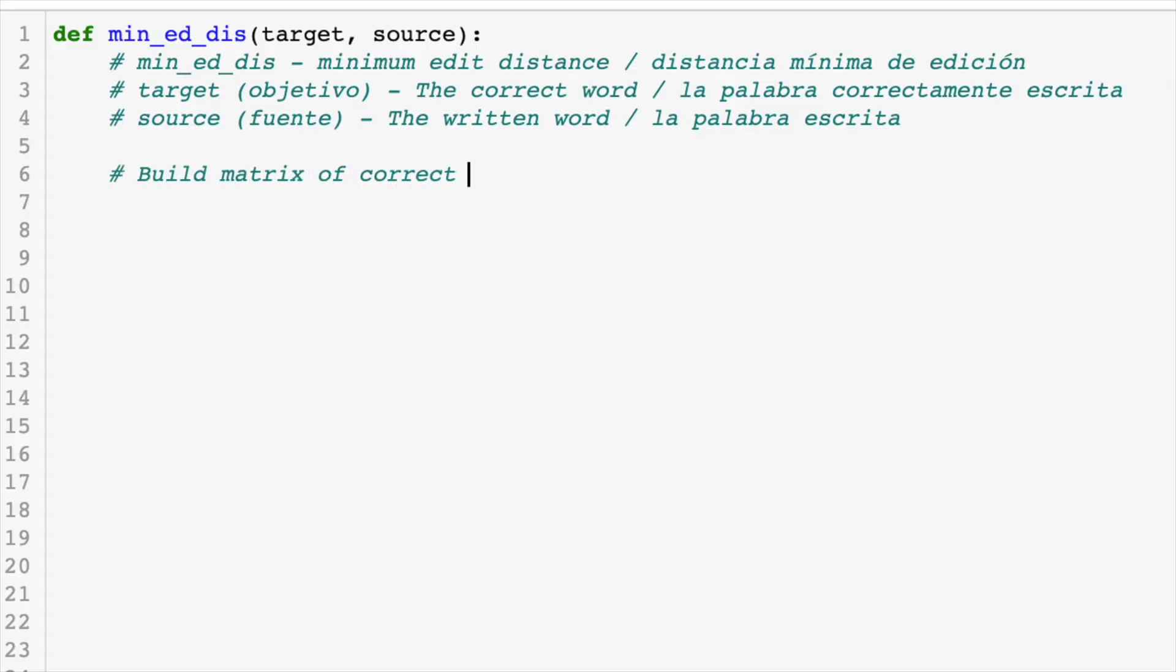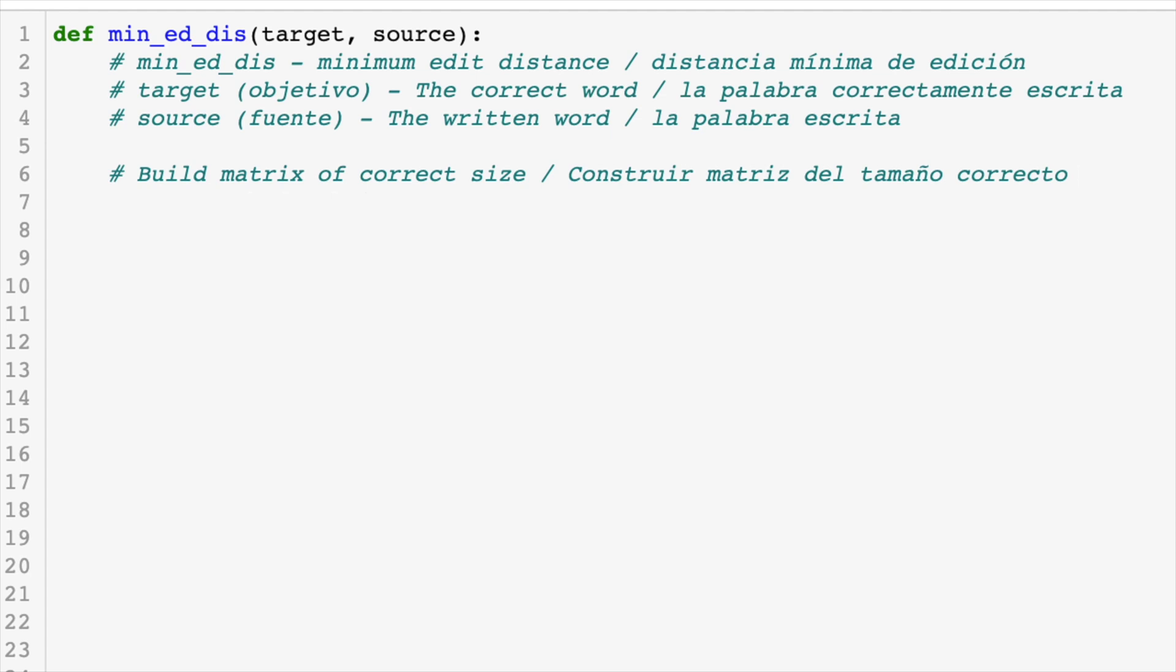The first step is to build an empty matrix of the correct size. Remember, the target is the number of columns, and the source is the number of rows. Let's create a list of the target string where every entry is a single letter. Target is equal to a list of k for k in target. We will do the same thing with the source word. Now that we have broken the words into strings of letters, let's create an array of zeros based on their size. Sol is np.zeros of size length of source and length of target. Sol, of course, is short for solution.